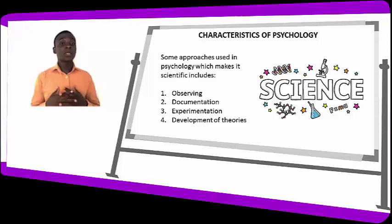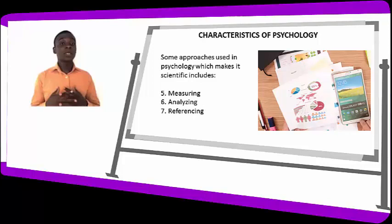Some approaches used in psychology which make it scientific include: number one, observation; number two, documentation; number three, experimentation; number four, development of theories; number five, measuring; number six, analysis and referencing.